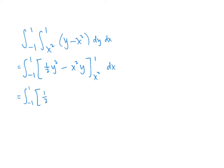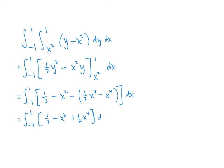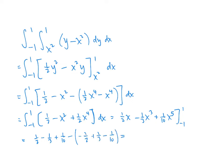When I plug in 1 for y, I get one-half minus x squared, minus what I get when I plug in x squared for y, which gives one-half x to the fourth minus x to the fourth. Simplifying, I get one-half minus x squared plus one-half x to the fourth. Taking the antiderivative, I get one-half x minus one-third x cubed plus one-tenth x to the fifth. Plugging in 1 and −1: (one-half minus one-third plus one-tenth) minus (−one-half plus one-third minus one-tenth). This works out to 4/15 minus (−4/15), which is 8/15.